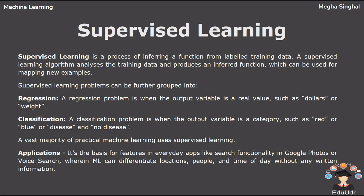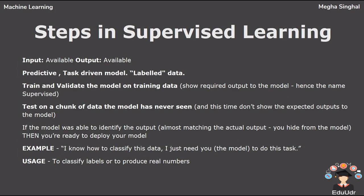Supervised learning problems can be further grouped into regression and classification techniques. Regression is used when your output variable is a continuous variable — for example, if you want to predict height, weight, or sales in the market. Classification technique is used when your output variable is in the form of 0 or 1, yes or no — for example, predicting whether someone has a disease or not, or whether someone will subscribe for a term deposit. In supervised learning we have labeled data where the input and output variables are already known. We then train and validate the model on training data and test it on a chunk of data that the model has never seen.